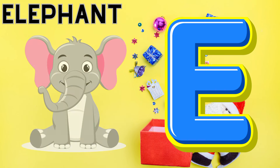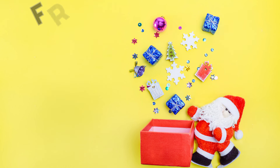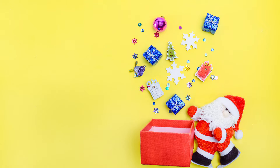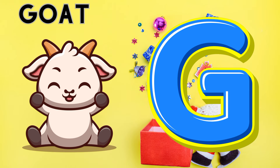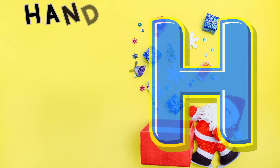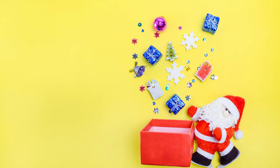E is for elephant, e-e-elephant. F is for frog, f-f-frog. G is for goat, g-g-goat. H is for hand, h-h-hand.